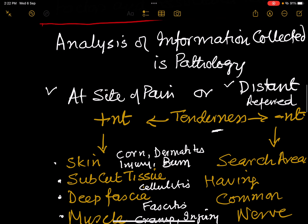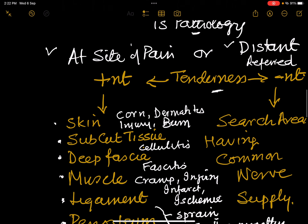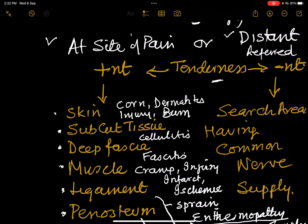Now let us analyze the information. The pathology can be at the site of pain or distant from it. If it is at the site, tenderness will be present. If it is distant, tenderness will be absent. Localized tenderness helps you decide whether it is referred pain or localized pain.